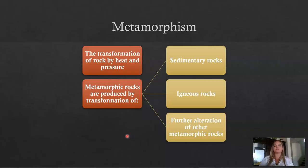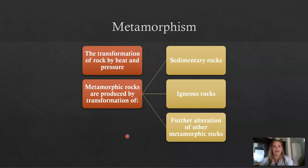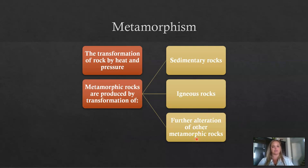Metamorphic rocks form from metamorphism. Metamorphism is when a rock is being transformed by heat and pressure — both of those things have to happen in order for a metamorphic rock to form. Metamorphic rocks are transformed from existing sedimentary rocks, igneous rocks, or the further alteration of metamorphic rocks. This goes back to the rock cycle.